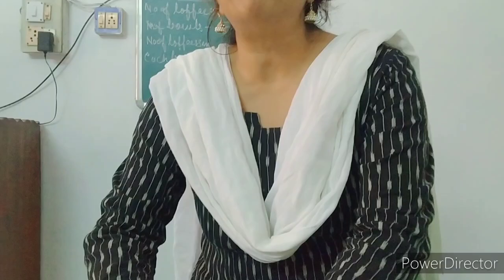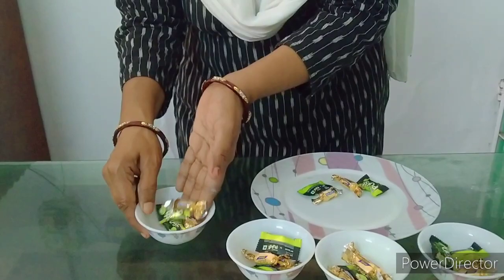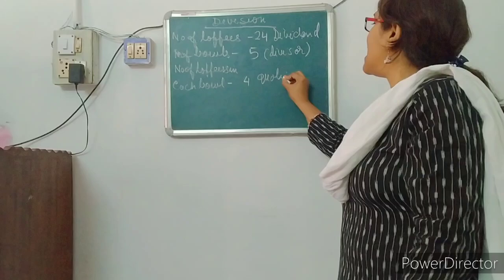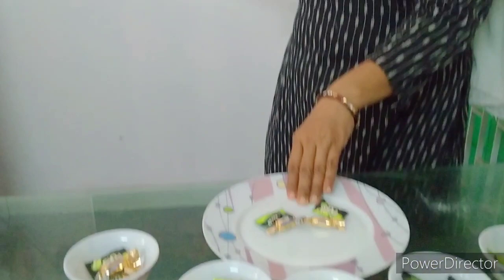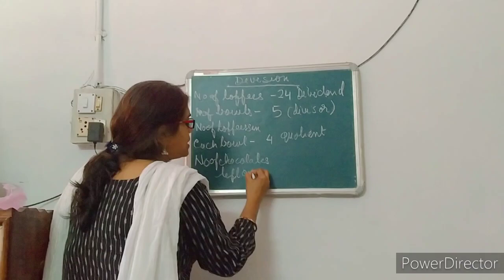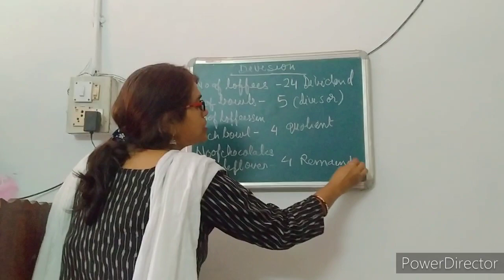See children, in each bowl 4 chocolates are there. That means that number of toffees in each bowl — 4 — is called quotient. And how many chocolates are left over? There are 4 chocolates on the plate. That means the number of chocolates left over is 4. It is called remainder.